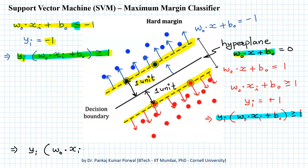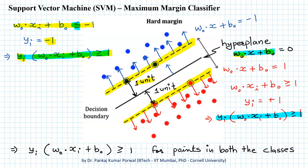For both the blue class and the red class, the value of the product yi times (w₀ dot xi plus b₀) is greater than or equal to one. If any point were to lie on the wrong side of the hyperplane, the signs of yi and w₀ dot xi plus b₀ would be opposite, making their product negative — that violates this constraint. Therefore, this inequality ensures the linear separability of the data with the scaled maximum margin for both classes equal to one unit.